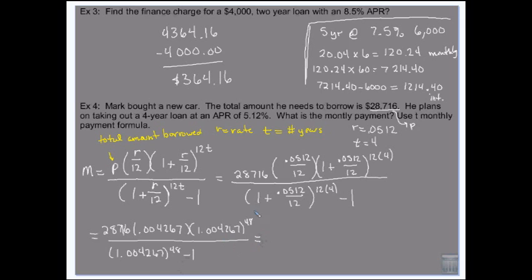What I get is $150.31 divided by 0.2267 and some other stuff, which gives me $662.97. So if you borrow $28,716 at 5.12% interest for four years, your payment for that car would be $662.97.